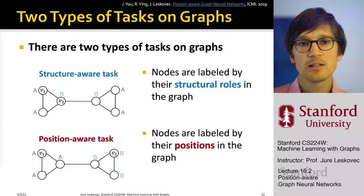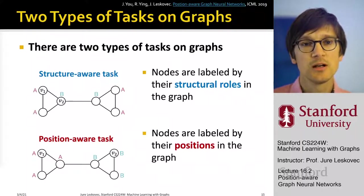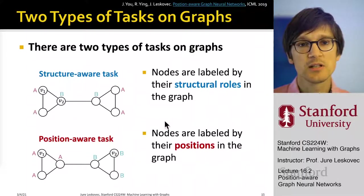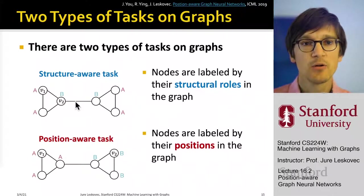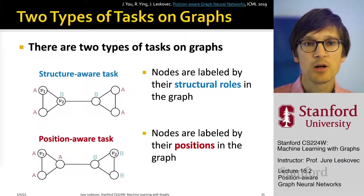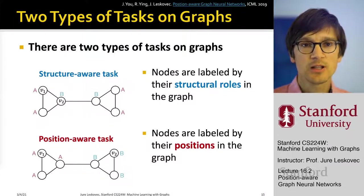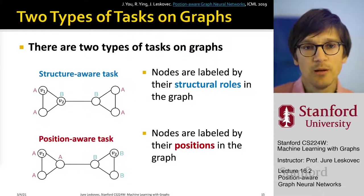In structure-aware tasks, for example, labeling of the nodes in this simple graph with two connected triangles — if nodes are labeled according to labels A and B — this works because the structure of the node and its neighborhood basically defines its label.